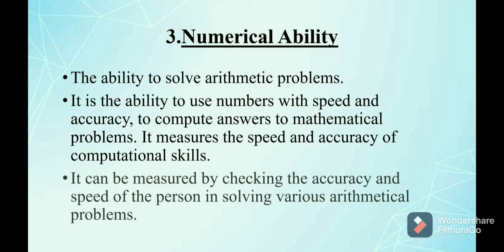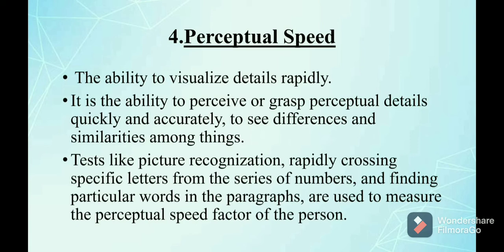The fourth primary mental ability is perceptual speed — the ability to visualize details rapidly. It is the ability to perceive or grasp perceptual details quickly and accurately, and to see differences and similarities among things. Tests like picture recognition, rapidly crossing specific letters from a series, and finding particular words in paragraphs are used to measure the perceptual speed factor.